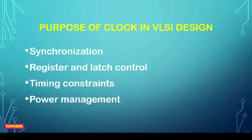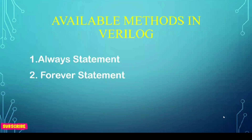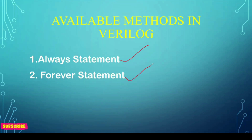Now let's see how we can write Verilog code for generating a clock. There are two methods: one is using the always statement and the other is using forever. There is also another way using repeat, but repeat generates the clock only for a certain number of times — however many times you specify, the system will perform only that many iterations. For always and forever, it is continuous generation of clock.